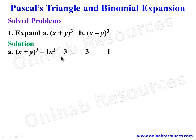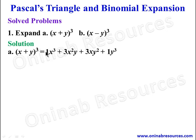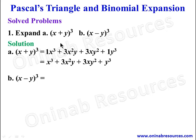For the first term, x has the highest power: x³. Then x², x, and x⁰ = 1. For y, starting from the last term: y³, y², y, and y⁰ = 1. Since the connector is positive, all terms are positive. Simplifying: x³ + 3x²y + 3xy² + y³.